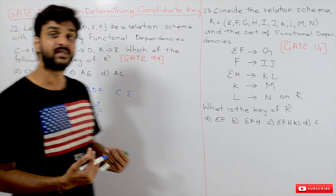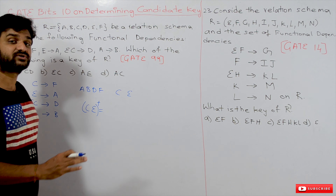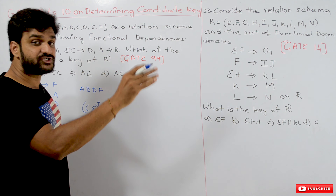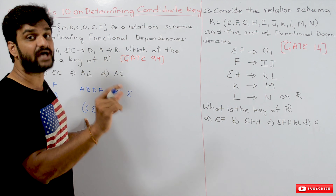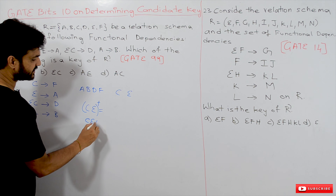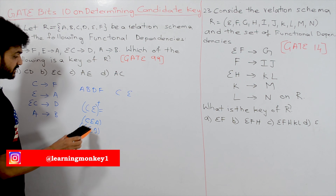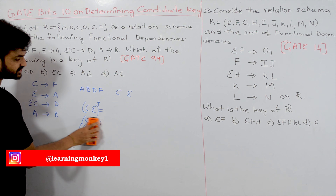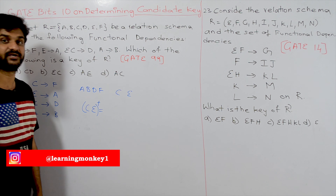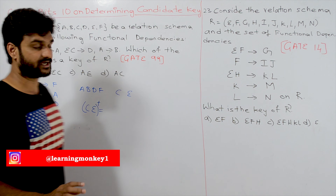In order to find the candidate keys we need all attributes in the closure, but we are missing C and E on the right-hand side. So the combinations we consider must include C and E. Without C and E in the combination, we can never obtain all the attributes.